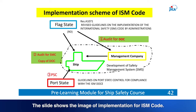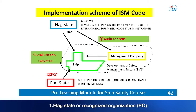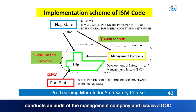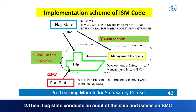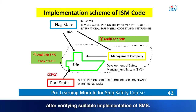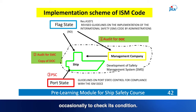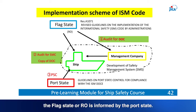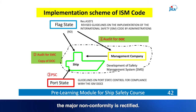The slide shows the implementation image for ISM Code. 1. The flag state or recognised organisation (RO) conducts an audit of the management company and issues a DOC after verifying suitable development and implementation of SMS. 2. The flag state conducts an audit of the ship and issues an SMC after verifying suitable SMS implementation. 3. Port states conduct PSC inspections to check the ship's condition. When a major non-conformity is detected, the flag state or RO is informed by the port state, and the ship is detained until the major non-conformity is rectified.